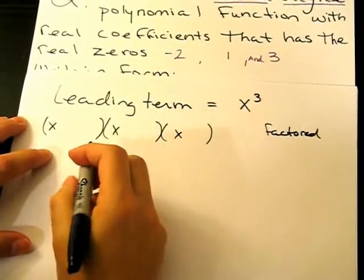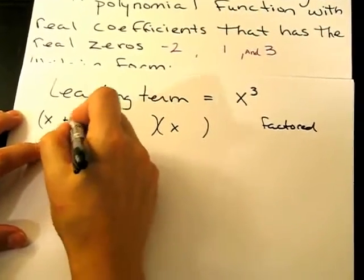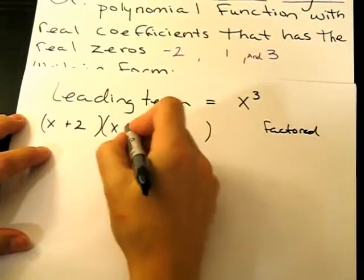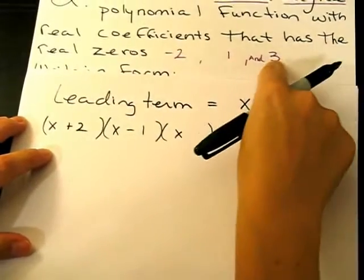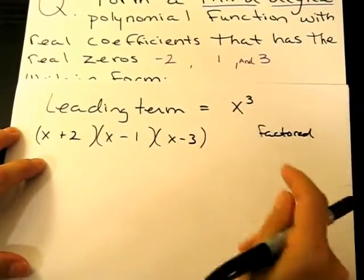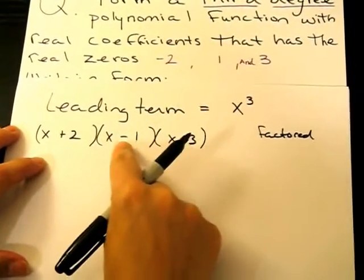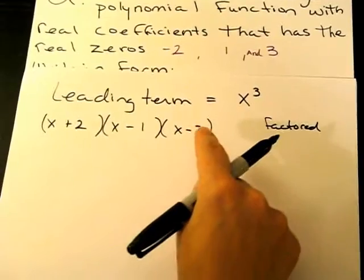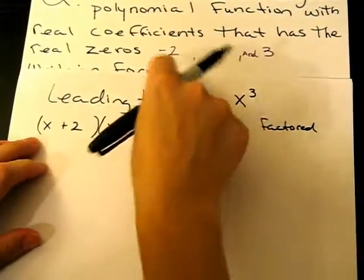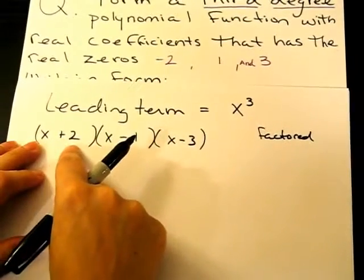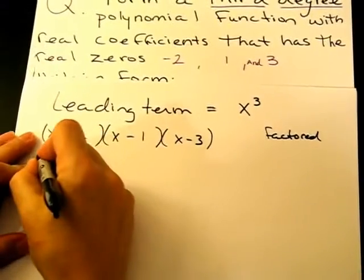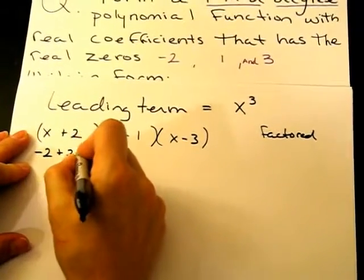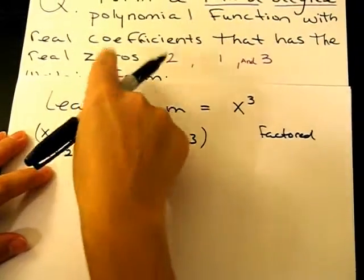The negative 2 becomes a positive 2, the positive 1 becomes a negative 1, and the same with the 3, it becomes a negative 3. The reason that we're changing the positive-negative sign on those is because if you were to plug in a negative 2 into this factor, it would become zero. It would look like this. And that is where we get the term zeros.